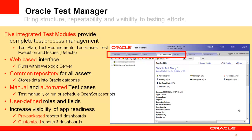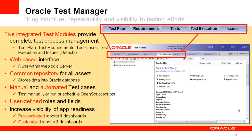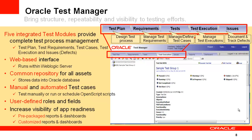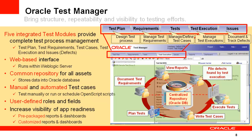The third product is Oracle Test Manager, our test management product. It has five integrated modules providing complete test process management: Test Plan, Test Requirements, Test Cases, Test Executions, and Issues. In the user interface these are represented as separate tabs. You can design the test process in the Test Plan tab, manage and define test cases based on specific requirements, manage execution in the Test Execution tab, and document and track defects in the Issues tab. Oracle Test Manager is a web-based application running on WebLogic Server with data stored in the Oracle database.